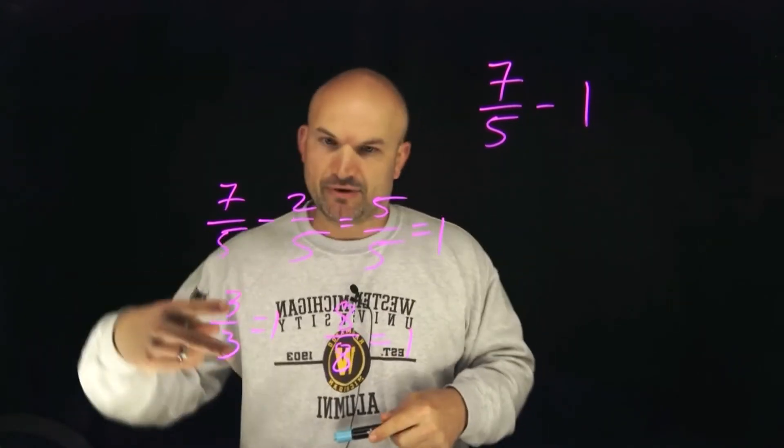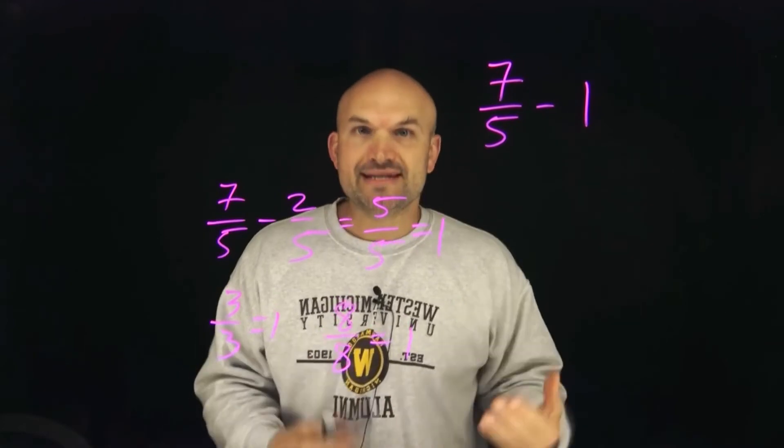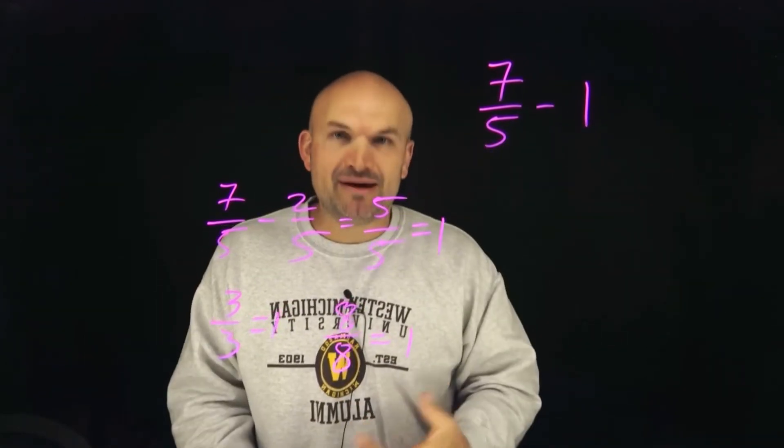Now again, do we want to pick eight over eight? Do we want to pick three over three? Or do we want to pick five over five? Well, in this case, since my fraction already has a denominator of five, I'm going to want to pick five over five.